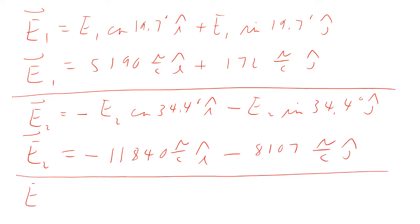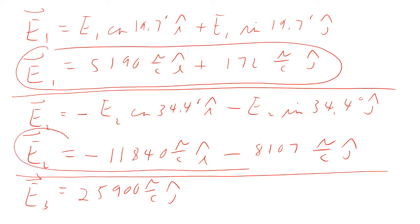Then finally E3 is only pointed straight up, because we had a positive charge here. So it was just going straight up there. And so that means that this is only going to be 25,900 newtons per coulomb J. So we've got E1, we've got E2, we've got E3.